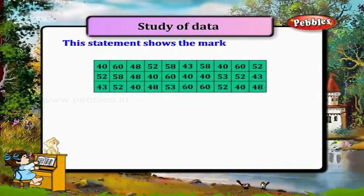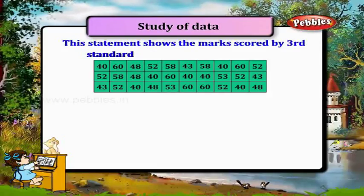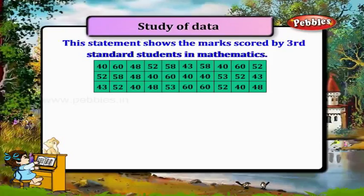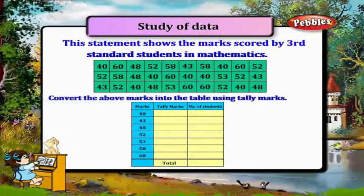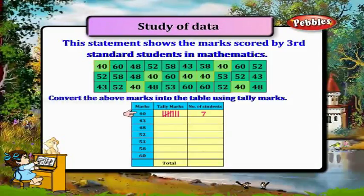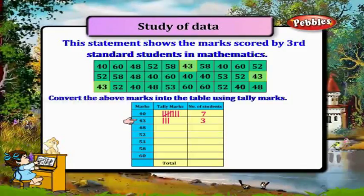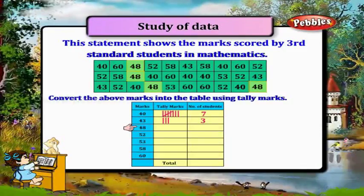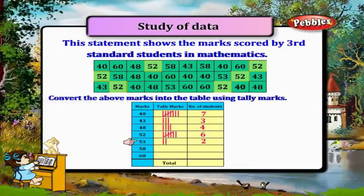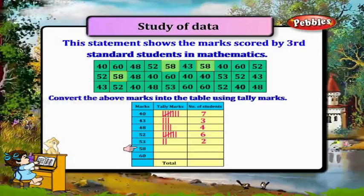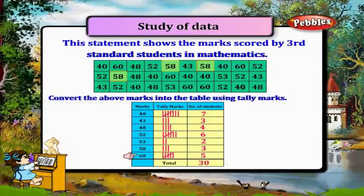This statement shows the marks scored by third standard students in mathematics. Now convert the above marks into a table using tally marks. How many students got 40? 3 students. 48 — 4 students. 52 — 6 students. 53 — 2 students. 58 — 3 students. 60 — 5 students.